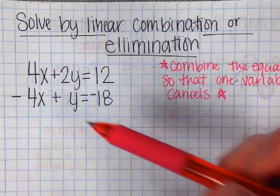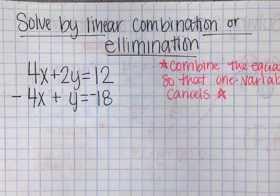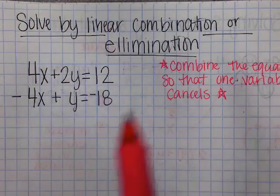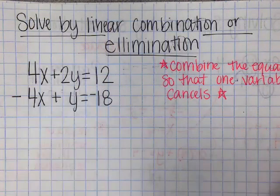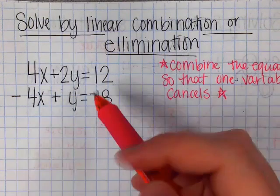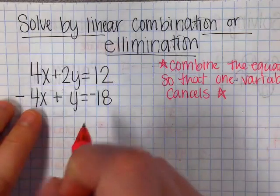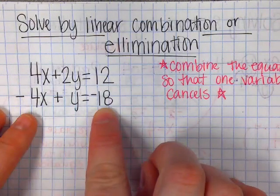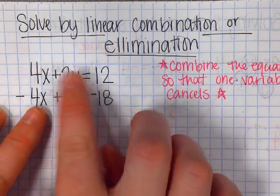But on today's assignment, you're going to have to do all of them by linear combination. And then after we finish the specific assignments where it tells you how you have to solve them, it doesn't matter to me. You could also do substitution where you have to get the y by itself. So you would add 4x and add 4x and then substitute in for y.